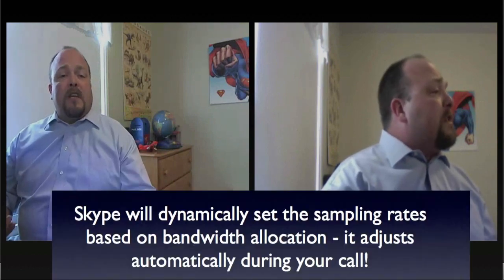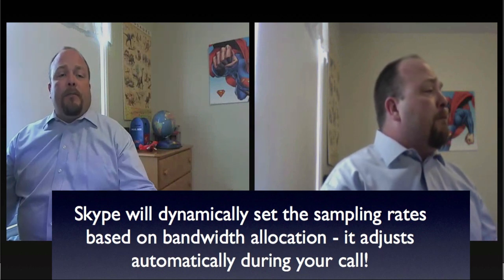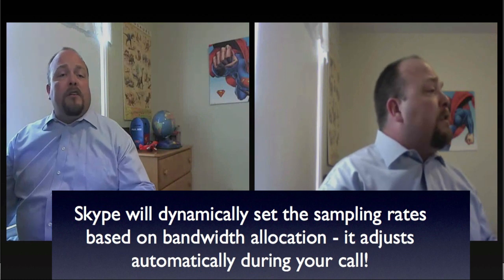Of course it will depend on bandwidth — how does Skype handle that? From the ground up we've been designed to work over the public internet. What sets Skype apart is that we're dynamic in our bandwidth allocation — we look at all legs of a call and set the audio and video sampling rates accordingly. We can use HD video conferencing point-to-point, using over a megabit to get 720p, but in a multi-party video call using standard definition only, we're talking an average of 100 to 250 kilobits per leg.